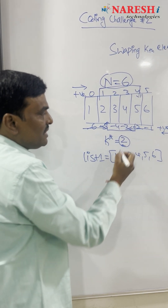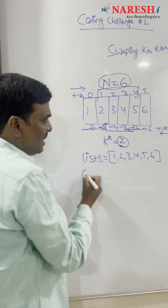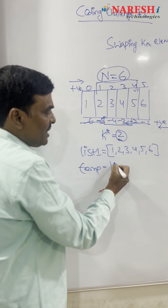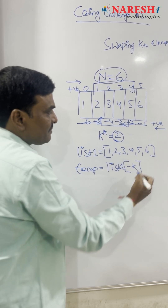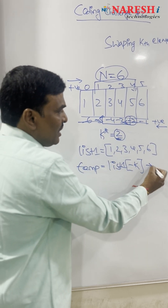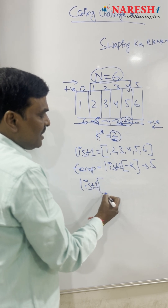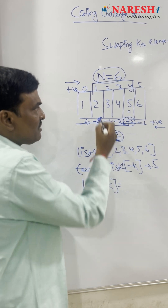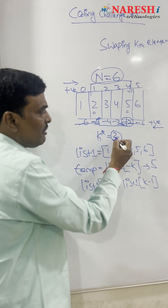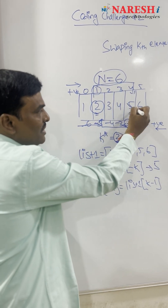I need to swap the element at the beginning second position with the element at the ending second position. For this I'm using one temporary variable, though this can also be done without a temporary variable. I set temp equal to list one of minus k. The value of k is two, so minus k is minus two, and the value at index minus two is five. Then I set list one of minus k equal to list one of k minus one. The value of k minus one is one, and the value at index one is two. So index minus two is replaced with the value two.